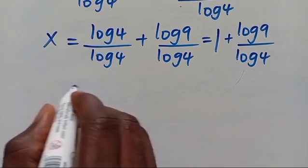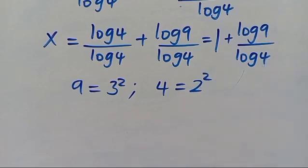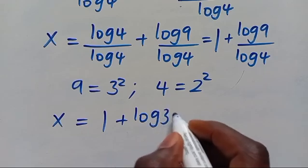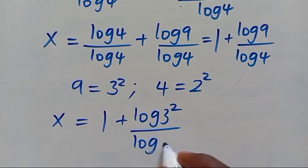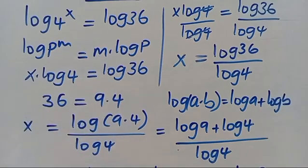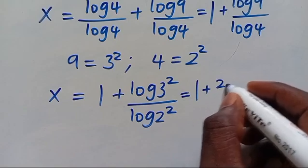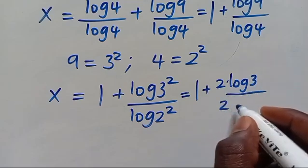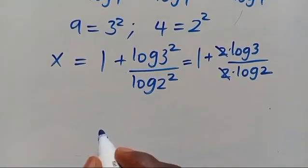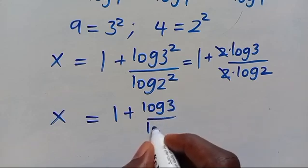From here, we note that 9 can be written as 3 to the power of 2, and 4 can be written as 2 to the power of 2. Putting them in, we have x equals 1 plus log 3² divided by log 2². Applying the power rule, the powers come down: x equals 1 plus 2 times log 3 divided by 2 times log 2. The 2s cancel, giving us x equals 1 plus log 3 divided by log 2.